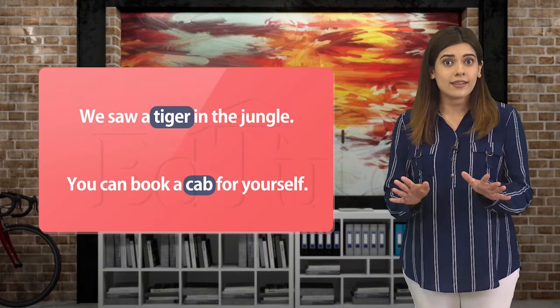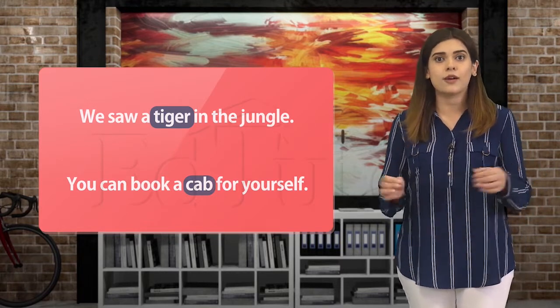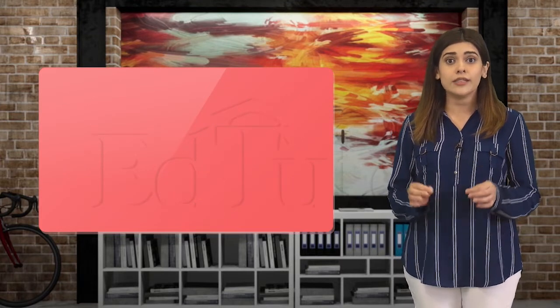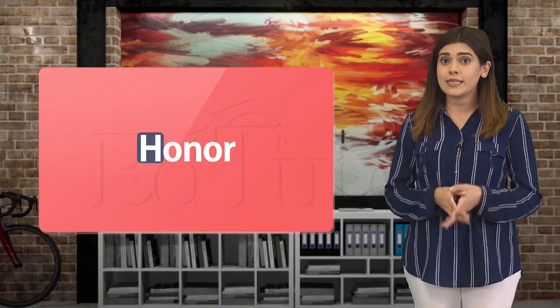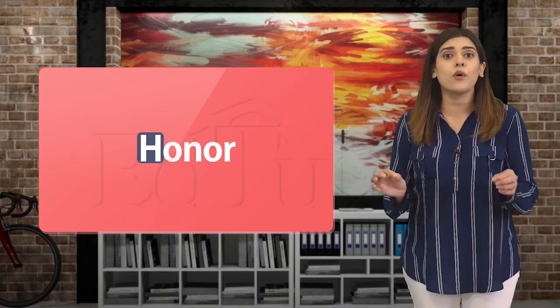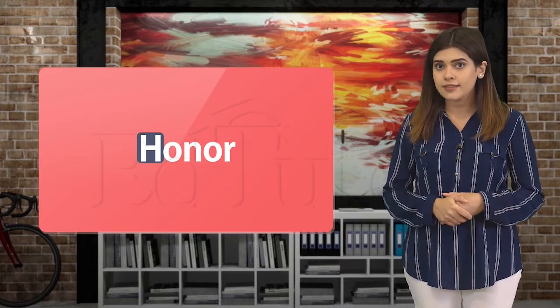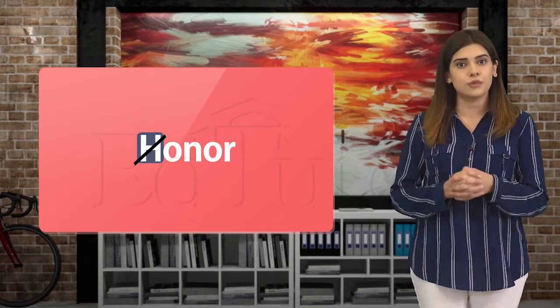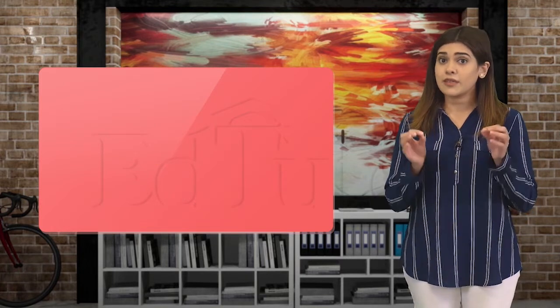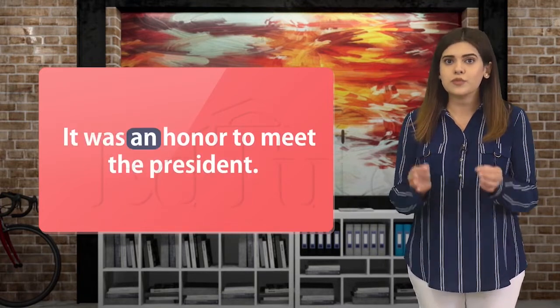But wait! Sometimes a noun that starts with a consonant makes a vowel sound. For example, the word 'honor' — it starts with the letter h, but when we say it, it sounds like 'o'. So what do we do in such a case? Well, we ignore the letter and apply the indefinite article rule based on the sound. If it is a vowel sound, we use the article 'an'. For example: 'It was an honor to meet the president.'